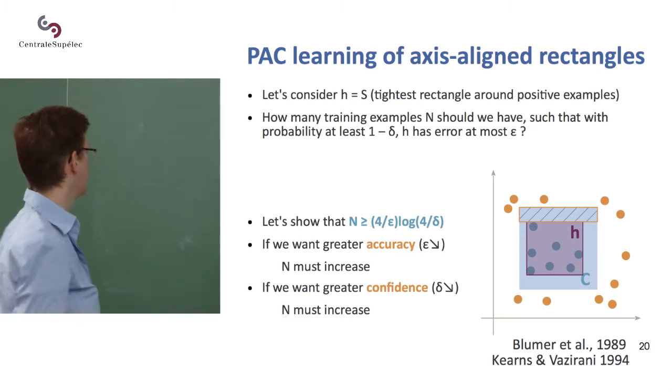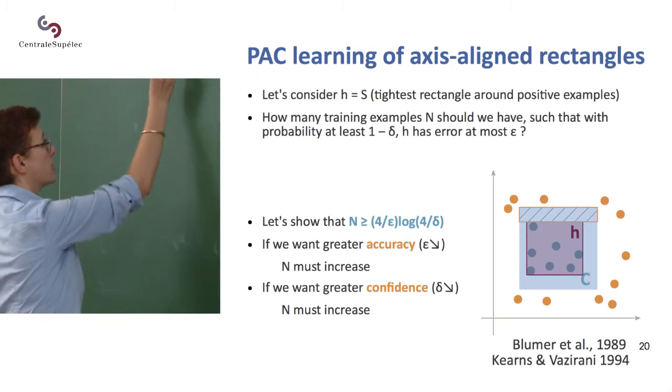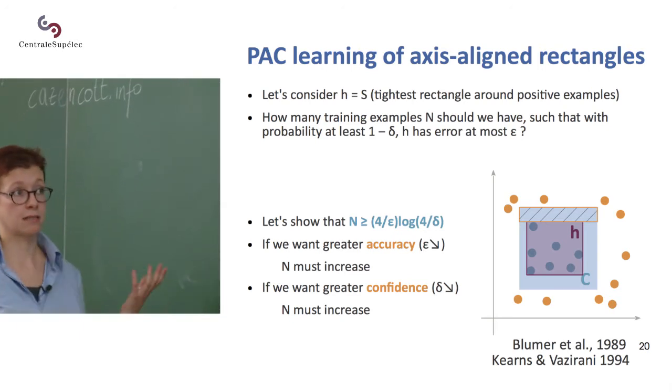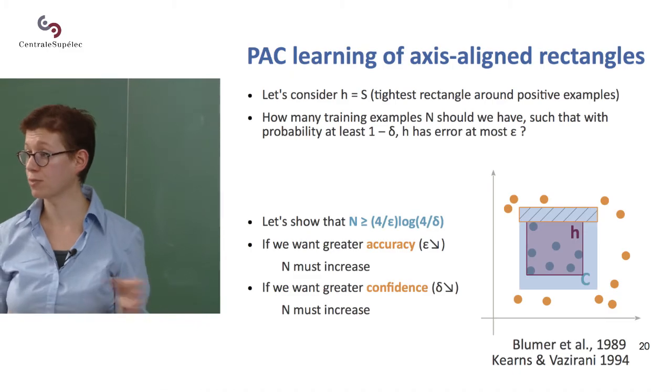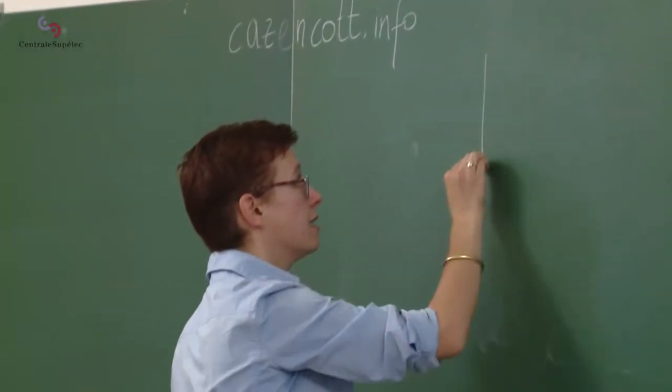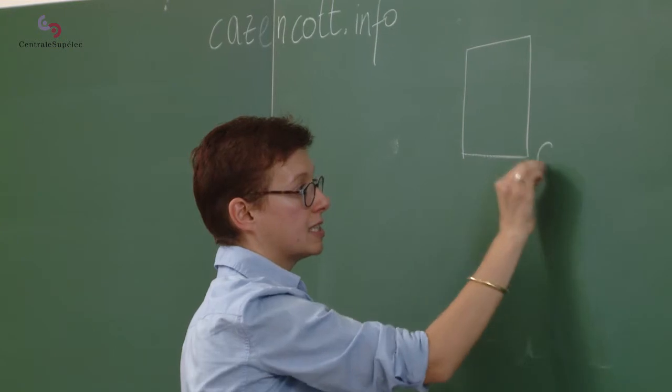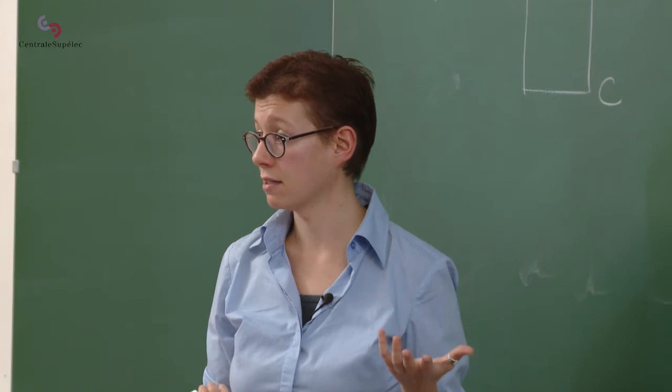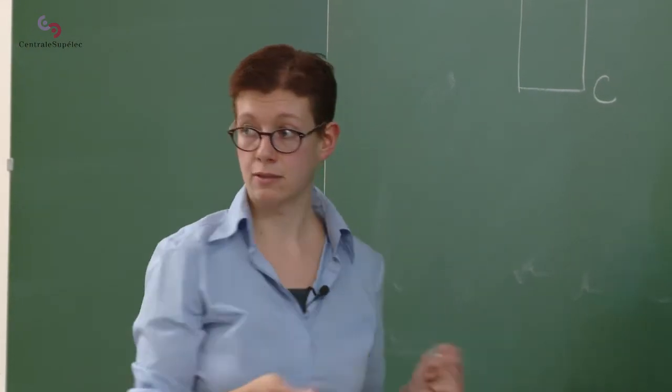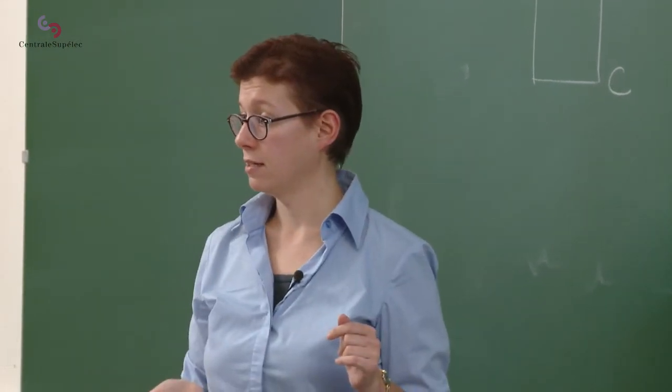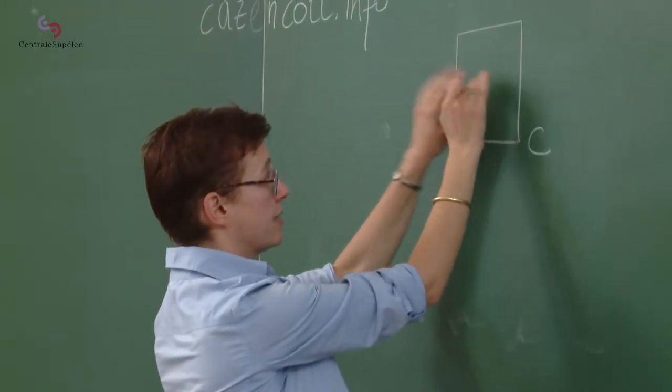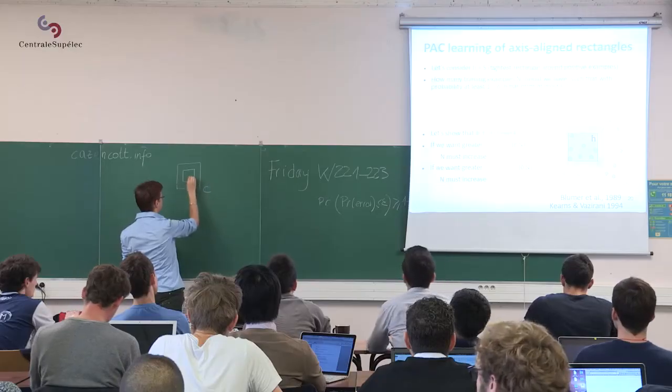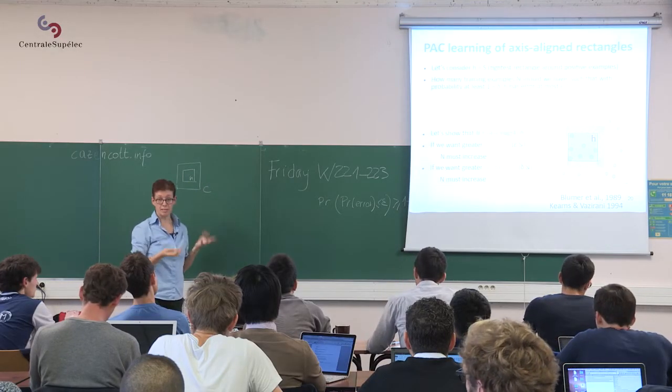So, what I'm going to start by doing is, so given that our data is nice, we have this, so if C is a true class, we know that our tightest fit is included in the true class. Does that make sense for everybody? The true class has all the positive examples inside and all the negatives outside, so if I'm tied to the positive example, I'm inside the true class.